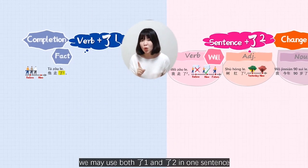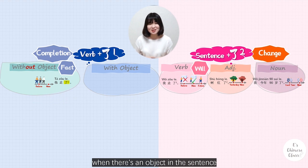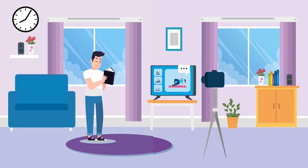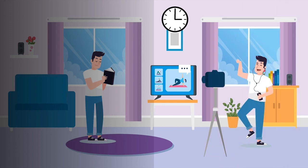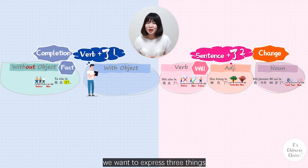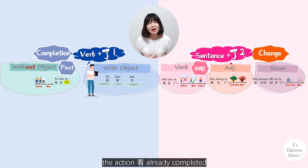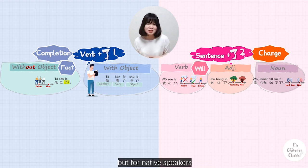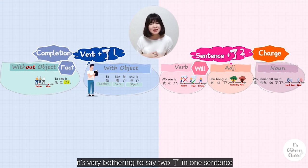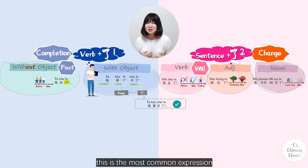Sometimes we may use both 了1 and 了2 in one sentence to show the completion, especially when there's an object in the sentence. For example, 他看书 — we have the object 书 and the action 看 already completed. We can say 他看了书了, which is the most standard expression. But for native speakers, it's very bothering to say two 了 in one sentence. We prefer to omit one of them — only keep 了2. 他看书了 is the most common expression.